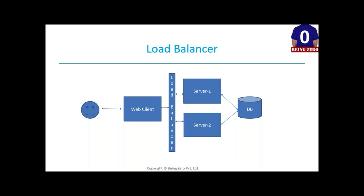Basically we start two server instances, both running the exact same code base. The advantage is load is shared - if you have 100 users, 50 go to server one and 50 to server two. Another advantage is high availability - if one server goes down the application is still up. Also, cloud platforms like Amazon EC2 can automatically increase hardware based on user requests through auto-scaling.